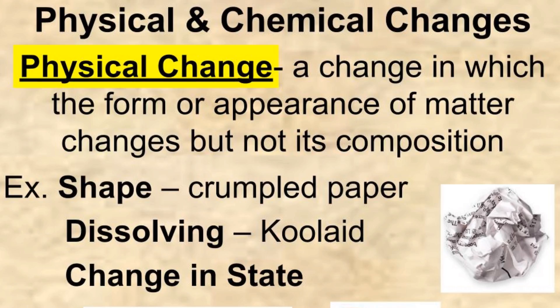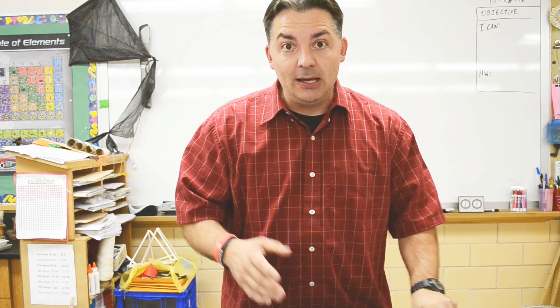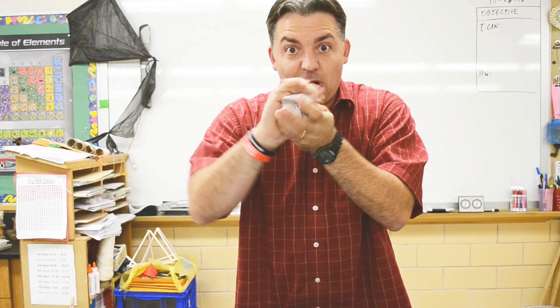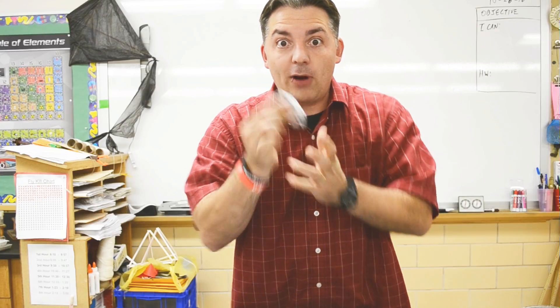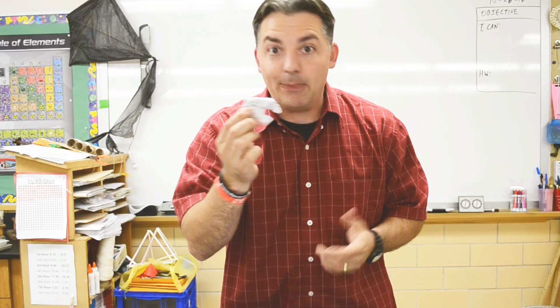A physical change in matter is a change in which the form or appearance of matter changes but not its composition — meaning it's still the same molecules. It might look different but it's still the same molecules. So an example might be like if I take this piece of paper and I crumble it all up — the molecules are still the same. It's still paper.